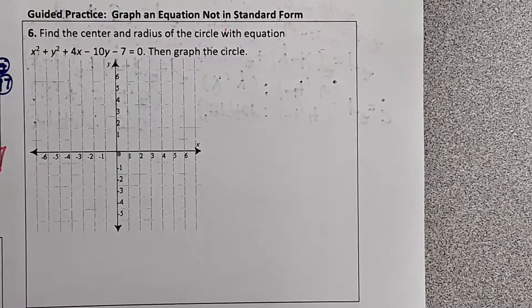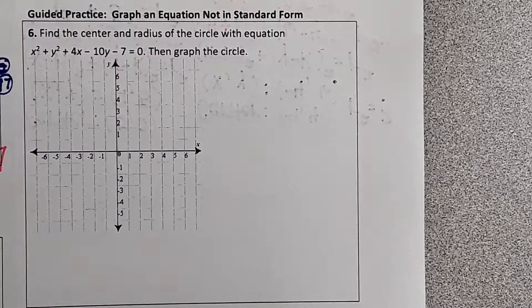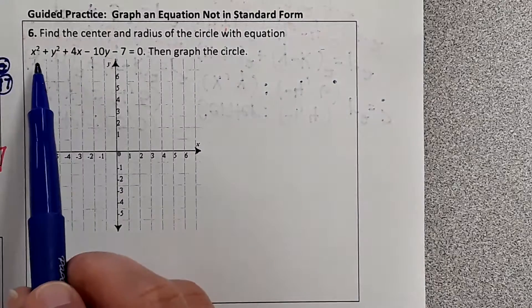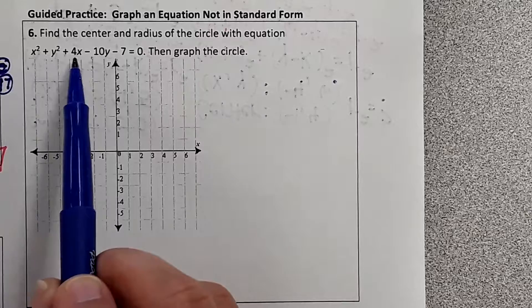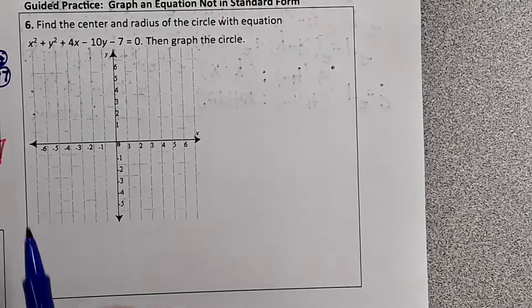So what we're going to have to do is use completing the square and work our way towards a circle equation. So we're going to rewrite it. I see an x squared, I see a 4x. So we're going to put all the x's together and all the y's together.